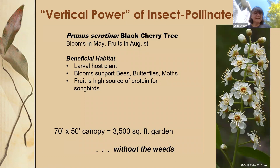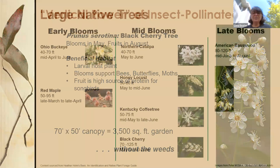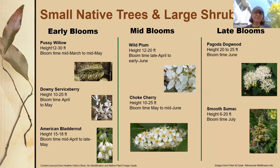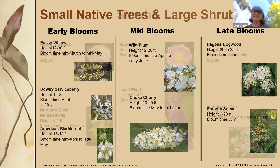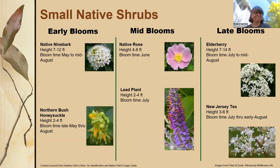These are a few of the small trees and large shrubs on Heather's list. The pussy willow is an early bloomer that prefers wetter soil and is a larval host plant for moths and butterflies. The wild plum is extremely fragrant and attracts a large diversity of insects. Pagoda dogwood has a beautiful horizontal form and doesn't sucker like other dogwood species. These small shrubs were highlighted in particular because they serve as larval host plants and attract a large number of pollinator species.